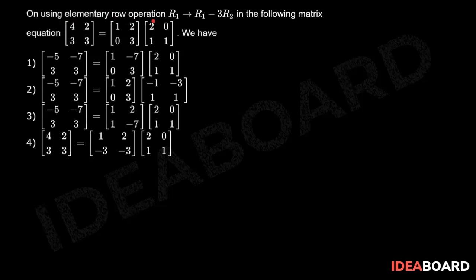On using elementary row operation R1 implies R1 minus 3R2, in the following matrix equation: [4, 2, 3, 3] equals [1, 2, 0, 3] into [2, 0, 1, 1], we have: